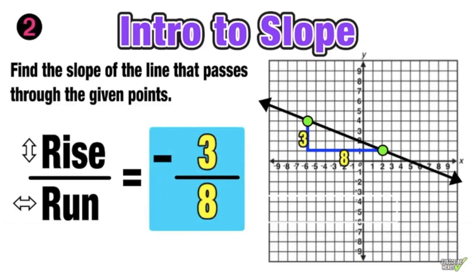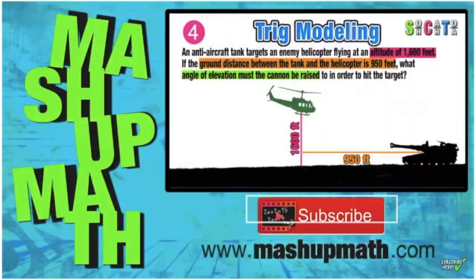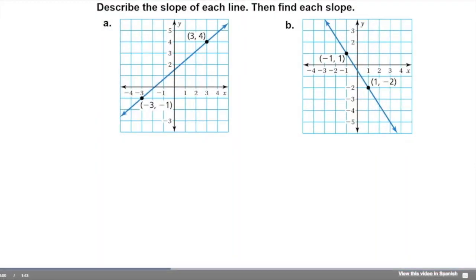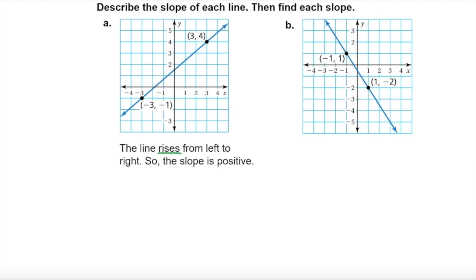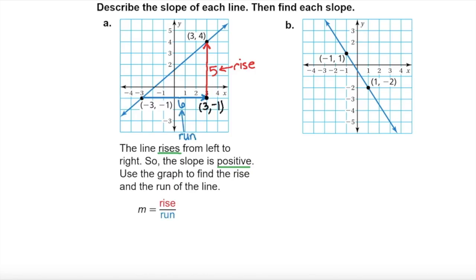Thank you so much for checking us out. Describe the slope of each line, then find each slope. Part A: The line rises from left to right, so the slope is positive. Use the graph to find the rise and run. To move from point (3, 1) to the point (3, 5), you rise by 5 units. Now the slope m is equal to the rise divided by the run. The slope is 5 divided by 6, or 5/6.